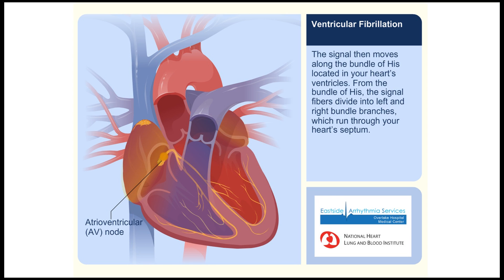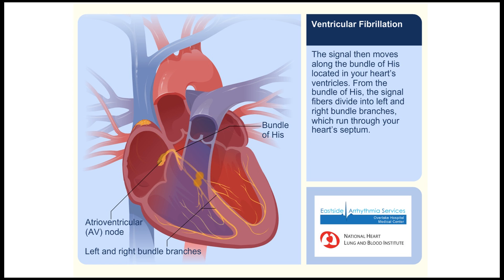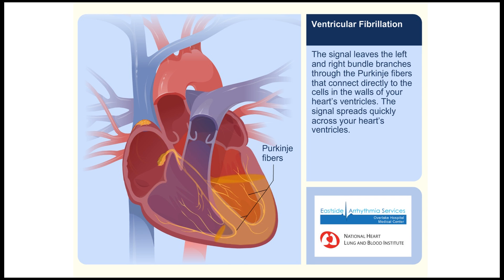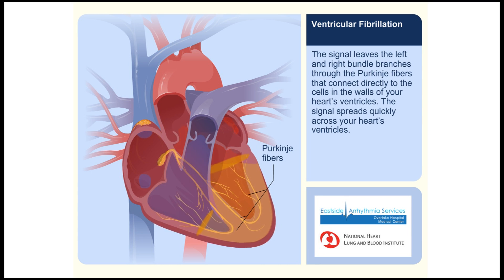The signal then moves along the bundle of His, located in your heart's ventricles. From the bundle of His, the signal fibers divide into left and right bundle branches, which run through your heart's septum. The signal leaves the left and right bundle branches through the Purkinje fibers that connect directly to the cells of the walls of your heart's ventricles, and the signal spreads quickly across your heart's ventricles.